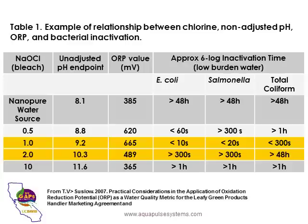At two parts per million of chlorine, the pH went up further, so the ORP came down to 489 millivolts, and the pathogens were not killed. Similarly, at 10 parts per million, the ORP went down lower to 365 millivolts due to high pH, and the pathogen survived. So it takes at least 650 millivolts to be effective if you want on-contact kill.